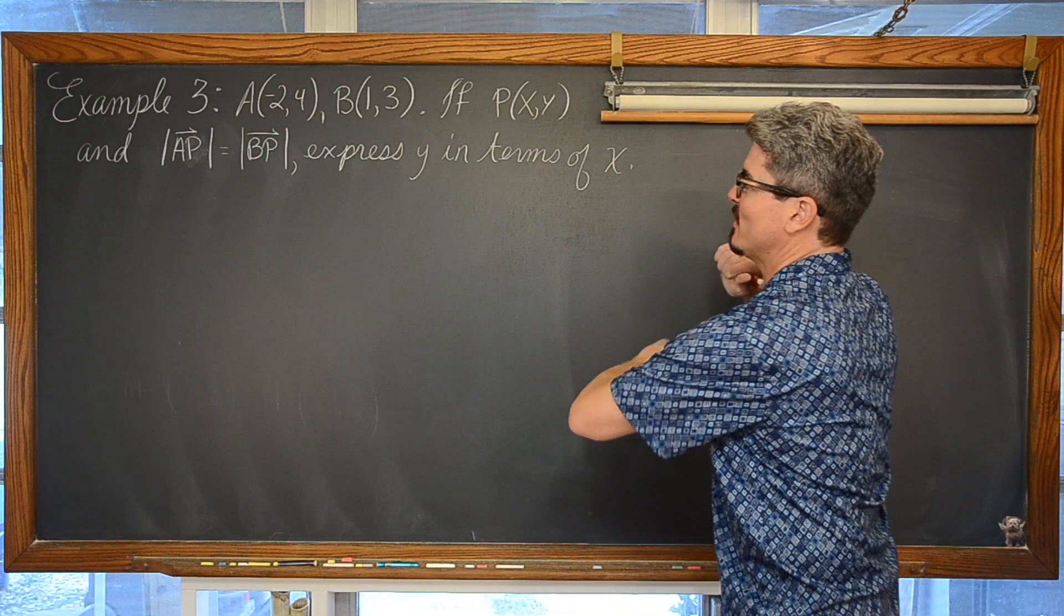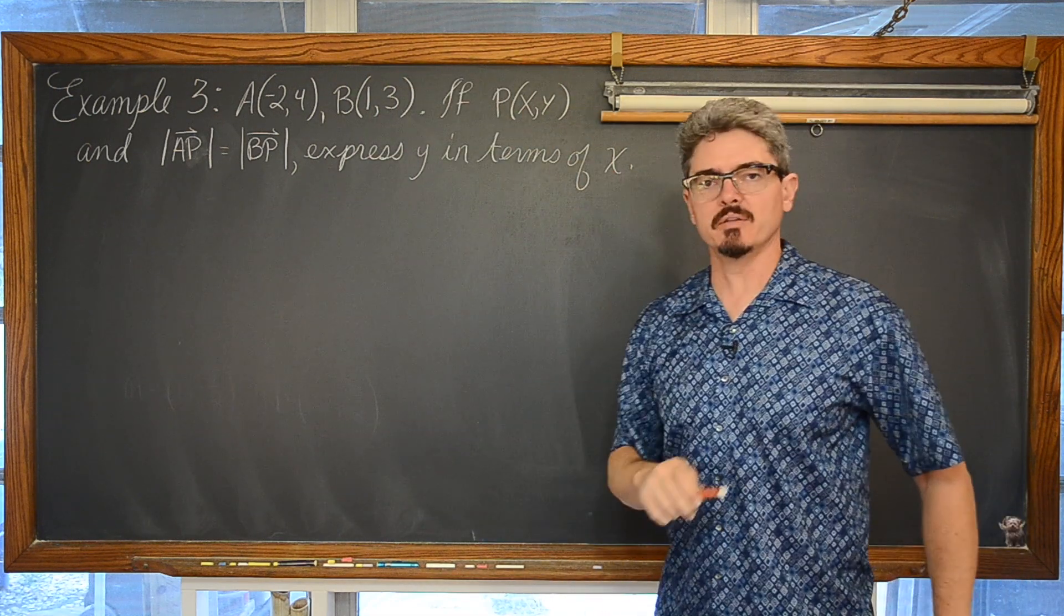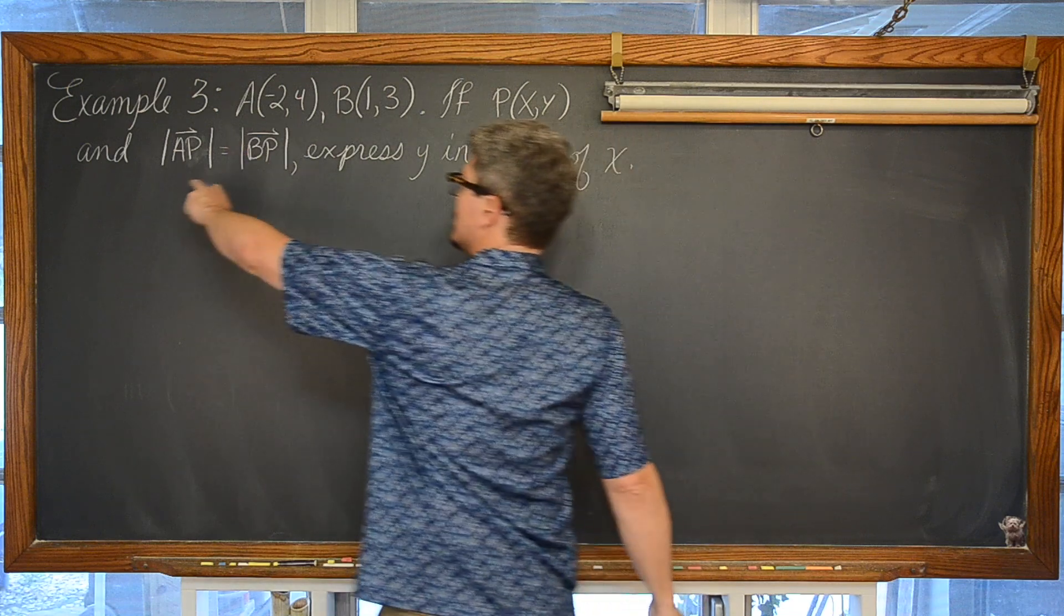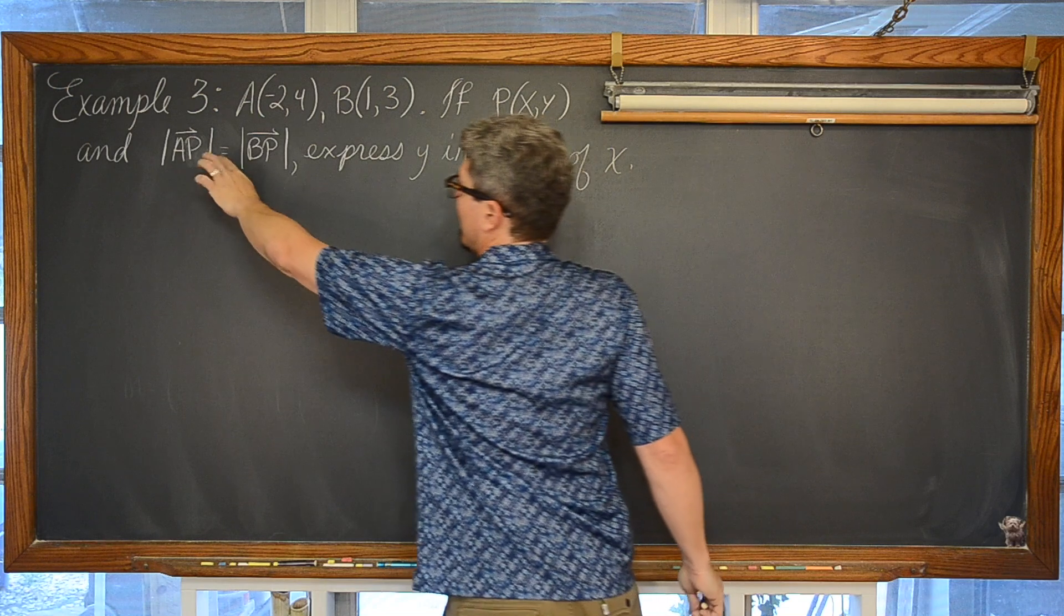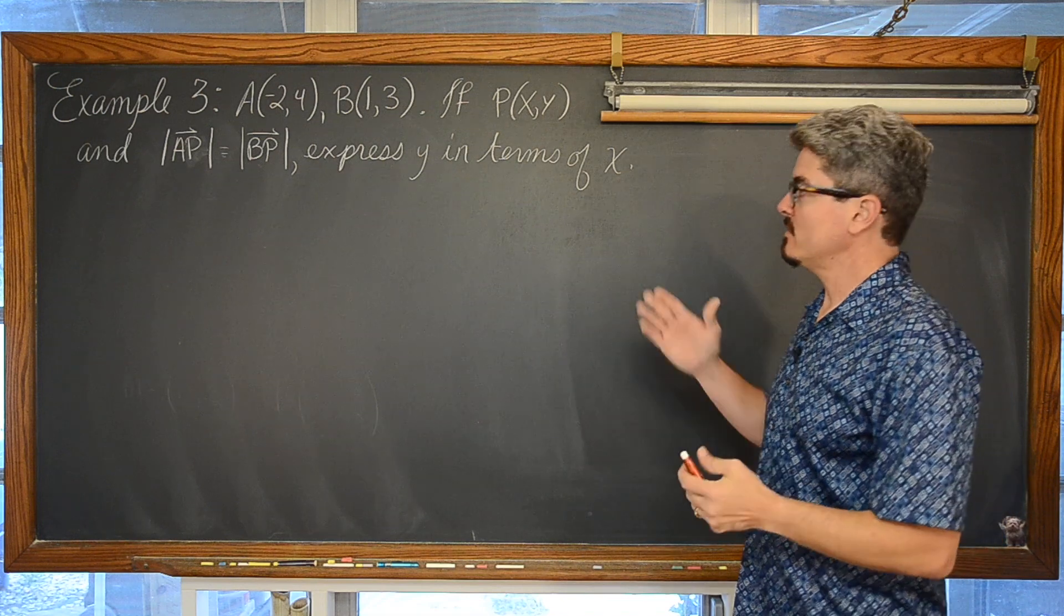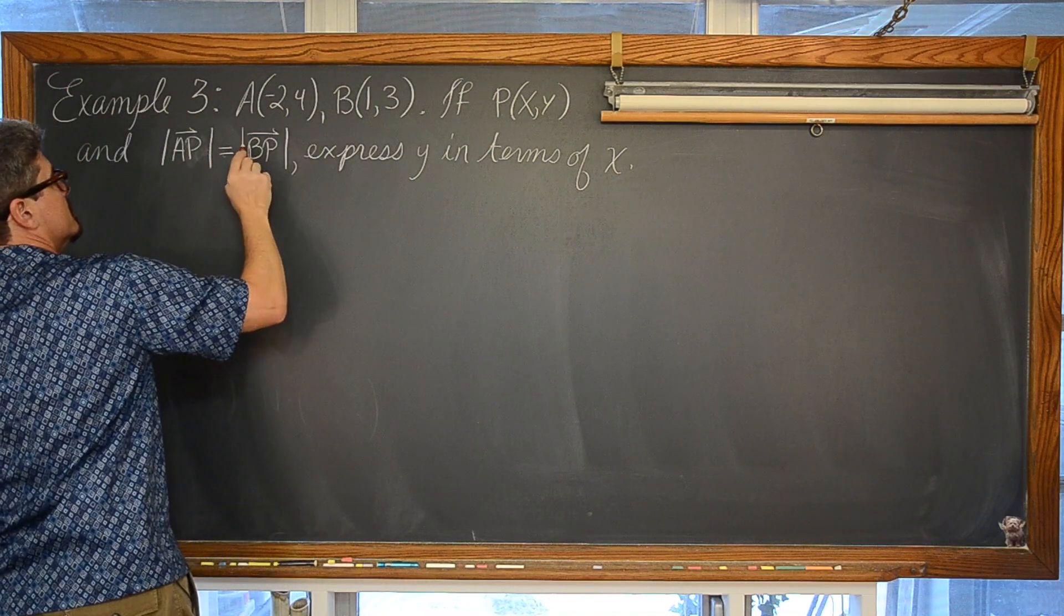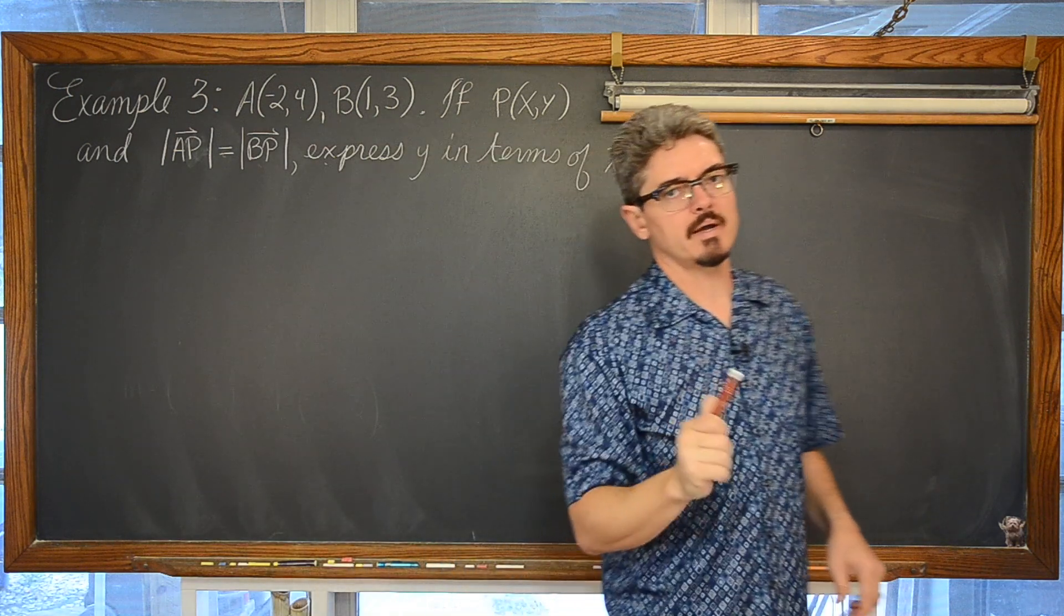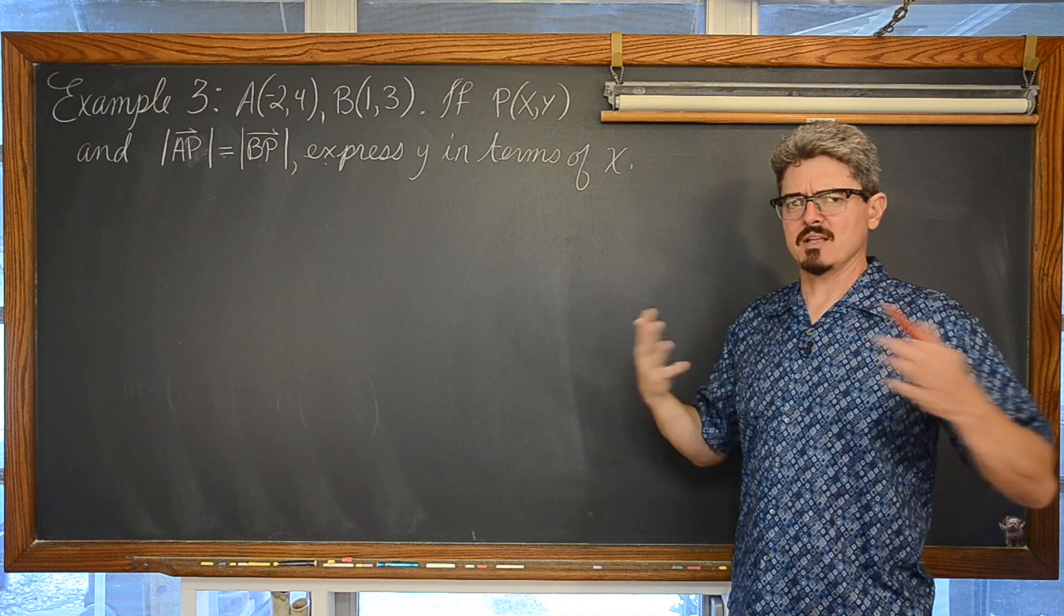And for our third and last example, we have point A is negative 2, 4. Point B is 1, 3. And point P is some unknown coordinates of x and y. But what we do know is that the magnitude of vector AP, so we have to go from point A to point P, and the magnitude of vector BP, well, they are equal. So using that information, the magnitude of vector AP and the magnitude of vector BP, the fact that they have to be equal, let's go ahead and write y in terms of x. And then, when we are done with this, we are going to analyze exactly what is this answer representing.